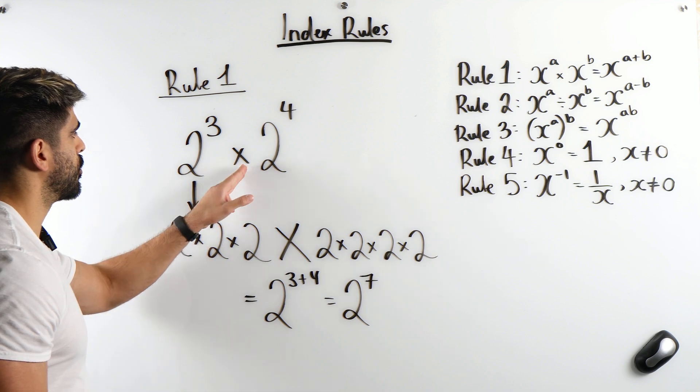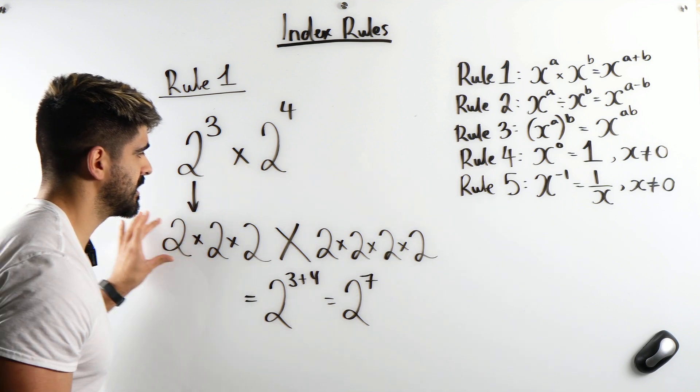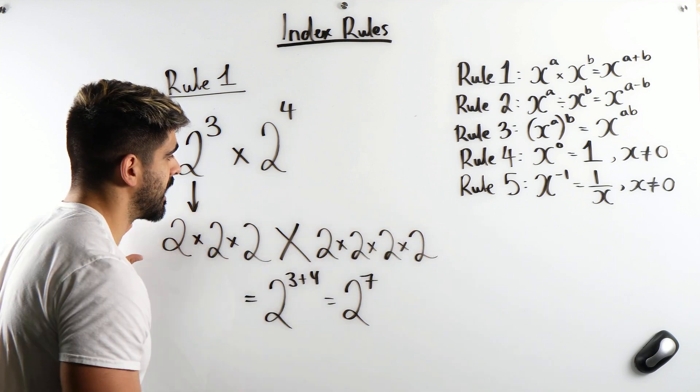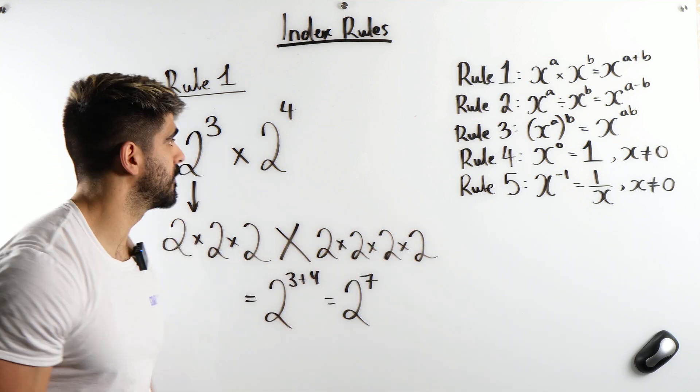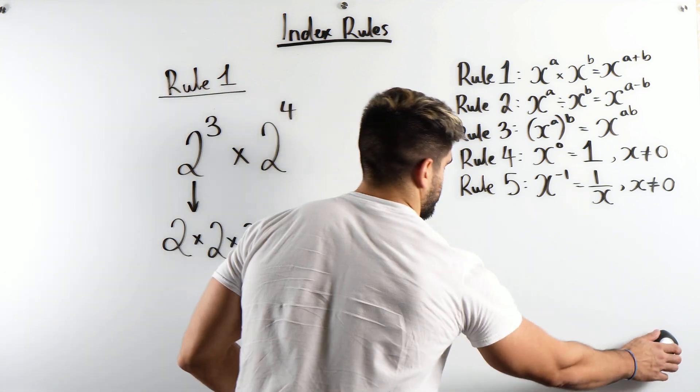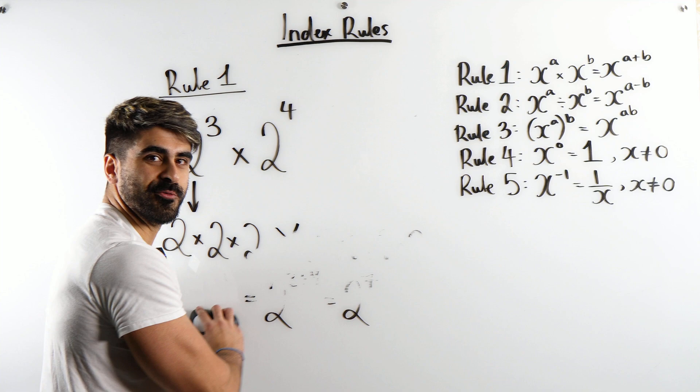So you're doing three plus four, which is seven. And this is why when we're multiplying numbers with the same base, we're basically just counting the number of times we are multiplying a number by itself. That's rule one. I'm just going to erase this. Let's take a look at rule two.